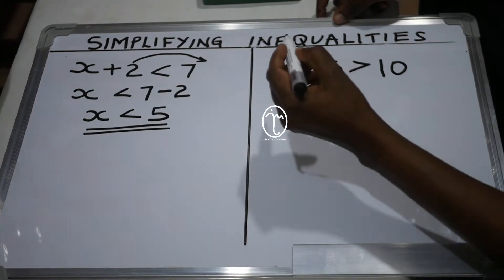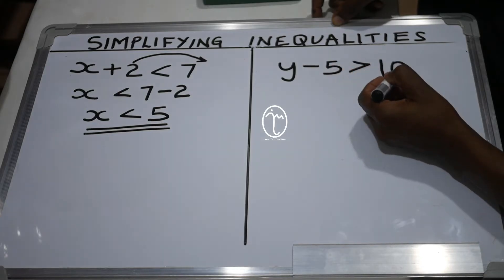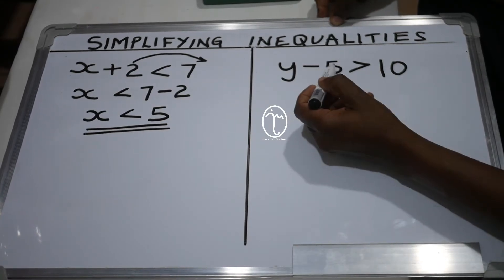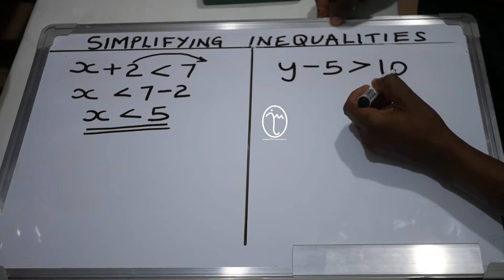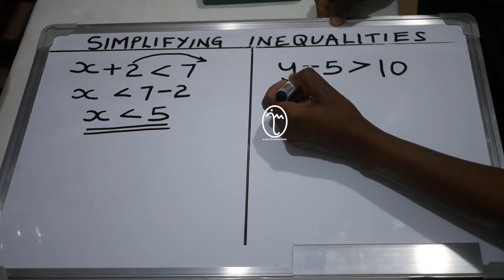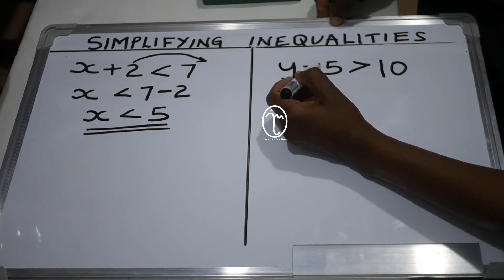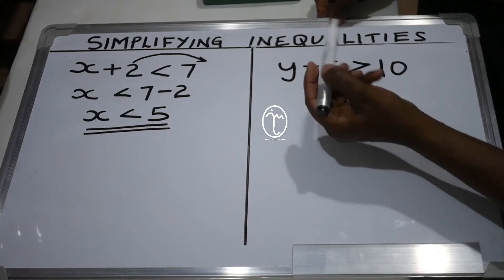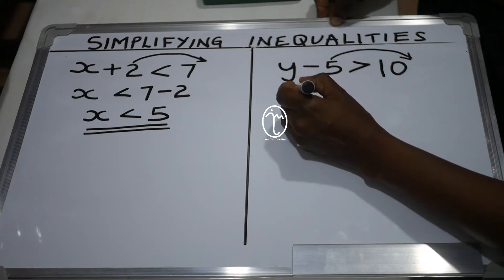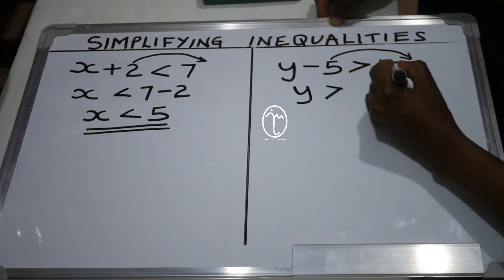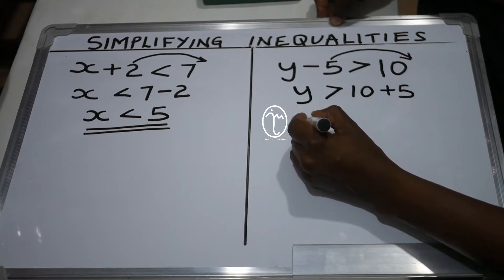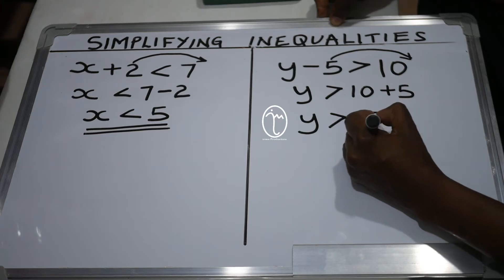Let us look at another example: y minus 5 is greater than 10. The like terms are 5 and 10. The smaller number is 5. As we move 5, we check its sign — it is negative. When a negative number moves to the other side, it changes to positive. So negative 5 becomes plus 5, and we get y is greater than 10 plus 5, which is y is greater than 15. That's our answer.